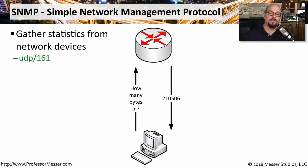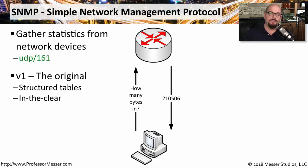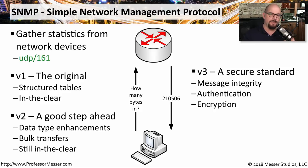If you're in charge of managing servers, switches, routers, and other infrastructure devices, you may want to gather metrics from those devices. One way to do this is to use SNMP, the Simple Network Management Protocol. It uses UDP port 161 to query and receive data from these infrastructure devices. There are different versions of SNMP. Version 1 was the original, using structured tables and sending requests and responses in a non-encrypted form. Version 2 allowed bulk transfers of data, but all of that communication was still sent in the clear. If you want encrypted communication for your management protocol, you want to use SNMP version 3, which provides message integrity, authentication, and encryption so that nobody can see what you're requesting or what the response was from these infrastructure devices.